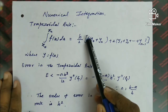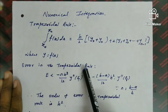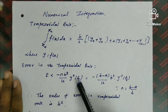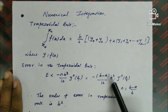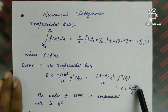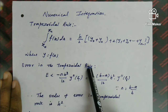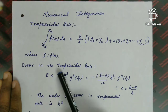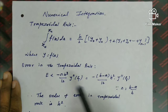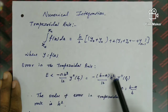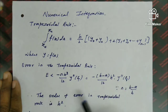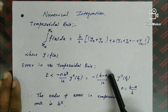Next, the error in the Trapezoidal Rule. The error e is less than minus n·h³/12 · y''(ζ), which equals minus (b−a)/12 · h² · y'', since n = (b−a)/h. The order of error in the Trapezoidal Rule is h². This is an important topic with two likely exam questions.